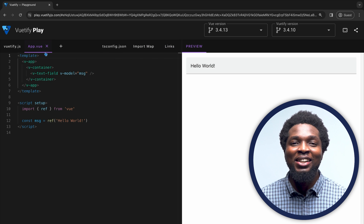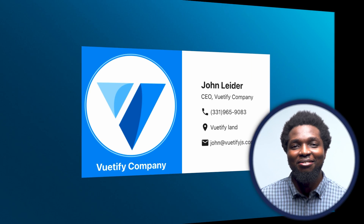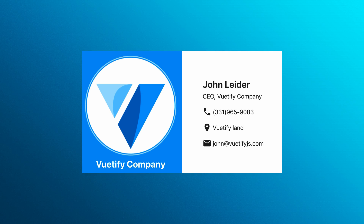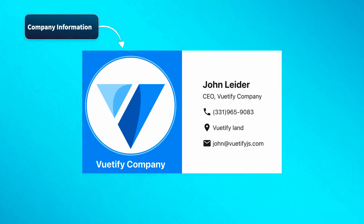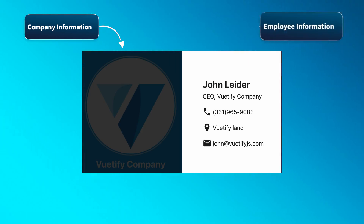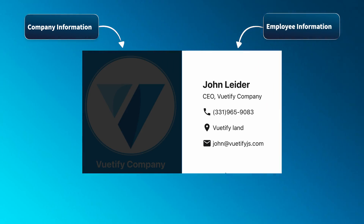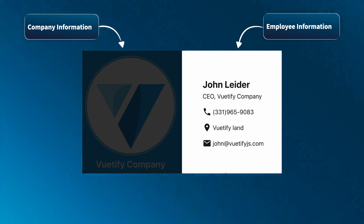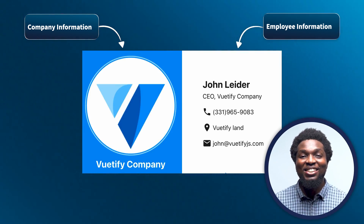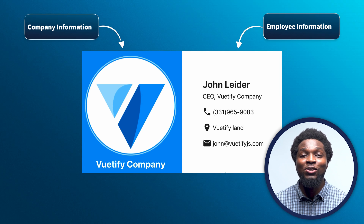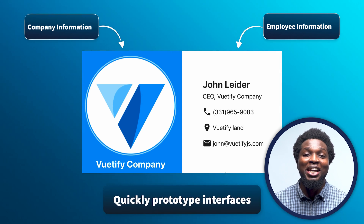Before we start coding, let's take a look at what we will be building. We have a simple business card interface with two columns. The left column contains the company information, such as the company name and company logo. And on the right, we have the second column with the employee's information, such as the name, the role, and contact information. In this lesson, we'll learn how to work with these elements to quickly prototype interfaces.